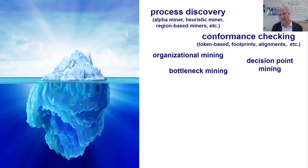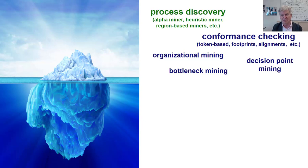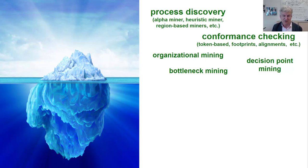We have been focusing on a relatively simple set of process mining techniques. That was, for example, process discovery — given an event log, we tried to discover a process model such as a Petri net or a BPMN model. Then we looked at conformance checking: we take an event log and a process model as input and try to detect where the real process deviates from the model, how severe that is, and when it happens. In the last lecture we added additional perspectives: decision point mining looking at data, organizational mining looking at people and departments, and bottleneck mining looking at delays.